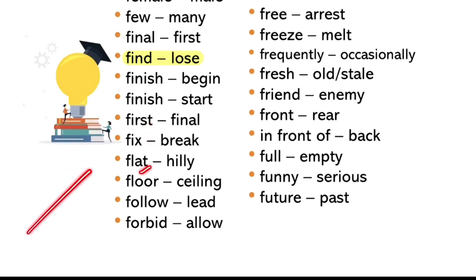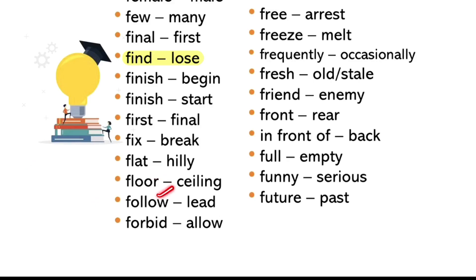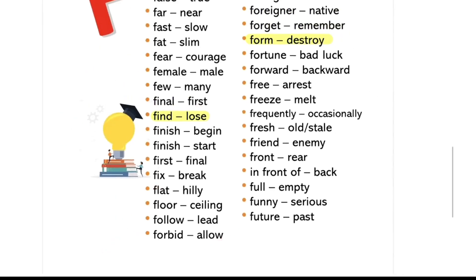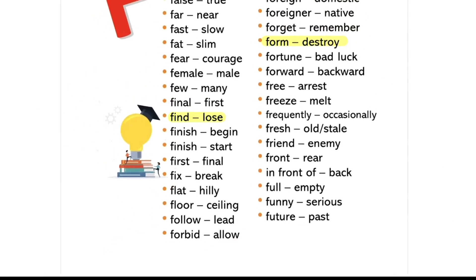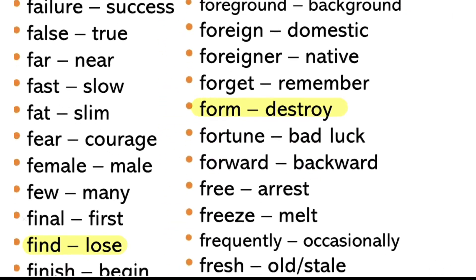Flat hai — jaisi ye flat hai. Hilly — matlab pahada hai waahan pe. Floor aur ceiling — this is floor, aur jo upar hota hai that is ceiling. Follow aur lead. Forbid — matlab ye kaam nahi karne diya jayega, forbid to do this — aur allow matlab permission hai. For ka against hota hai. Foreground matlab saamne, background matlab pichhe.